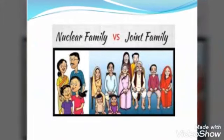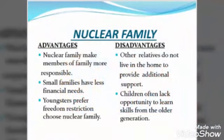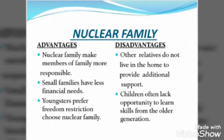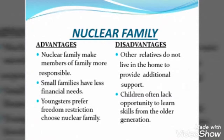Now we talk about some advantages and disadvantages of joint family and nuclear family. First we talk about nuclear family's advantages and disadvantages. The advantage of nuclear family: nuclear family makes members more responsible. Nuclear family mein har member ki responsibility zyada hoti hai kyunki members kam hote hain. The second advantage is small families have less financial needs. Small family mein kam log hote hain toh unki financial needs bhi kam hoti hain. The third one is youngsters prefer freedom and dislike restriction, so they choose nuclear family.